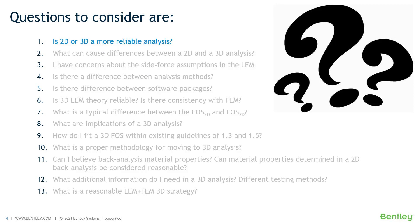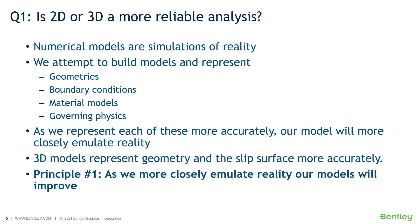Is 2D or 3D a more reliable analysis? Numerical models are simulations of reality. We attempt to build models and represent geometries, boundary conditions, material properties, and the governing physics to the best of our knowledge. As we represent each of these more accurately, our model will more closely emulate reality. 3D models represent geometry and the slip surface more accurately. Principle number one is that as we more closely emulate reality, our models will improve.